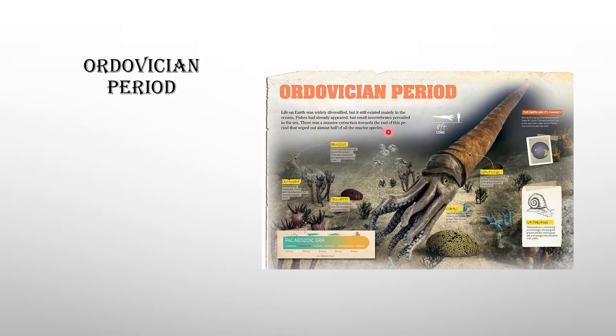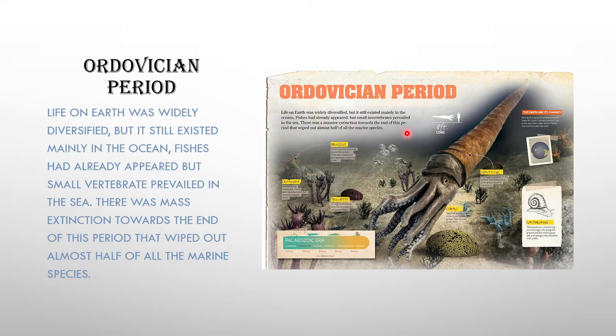The second period is the Ordovician period. The Ordovician period was widely diverse, but life still existed mainly in the ocean. Small vertebrates came, like the gastropods you can see here, but there was a mass destruction at the end of the period and almost half of all marine life died.